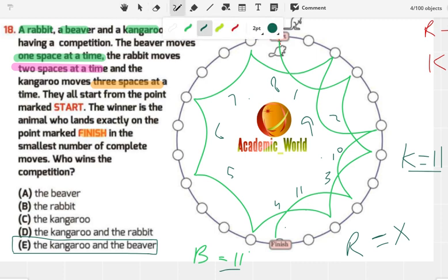The correct answer is E, because both the beaver and the kangaroo reached the destination by 11 jumps. The rabbit is unable to reach, so I hope now you understand.